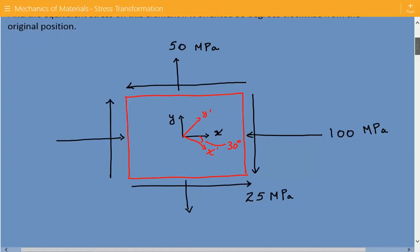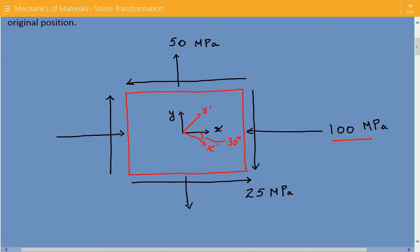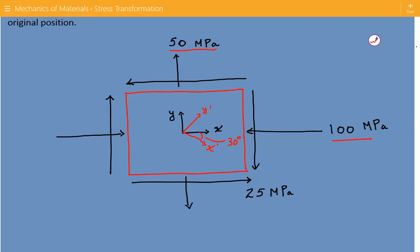Here is our differential element under plane stress. The stress in the x direction is negative 100 megapascals, which is negative because it is in compression. In the y direction it is 50 megapascals, positive because it is a tensile stress. And we have a negative shear stress equal to 25 megapascals. We need to find the equivalent stresses on this element oriented 30 degrees clockwise, showing the original x and y and the rotated coordinate system.